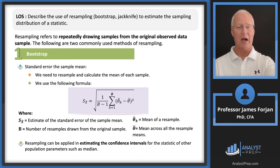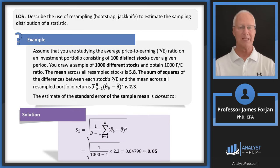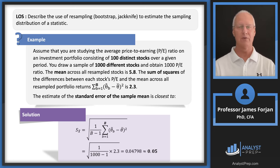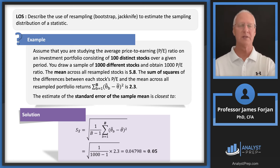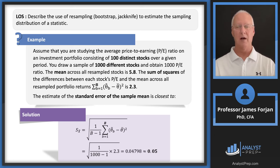Resampling can be applied to estimate confidence intervals — we'll cover those another day. Here's a quick example: we have price-earnings ratios for 100 distinct stocks, and you draw a sample of 1,000 PE ratios. The mean across all resampled stocks is 5.8, and the sum of squares is 2.3. The standard error of the sample mean is closest to 0.05.